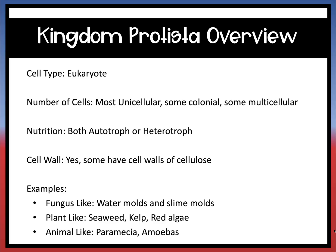The cell type for protists is that they are eukaryotes. Eukaryotes have a nucleus. For number of cells, they are mostly unicellular. Some are colonial, and some are multicellular.